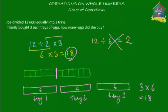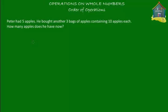But what if we have a mixture of additions, subtractions, multiplications, and divisions? Which do we do first? Let's take a word problem to find out. Peter had five apples. He bought another three bags of apples containing ten apples each. How many apples does he have now? The number statement would be five plus three times ten.